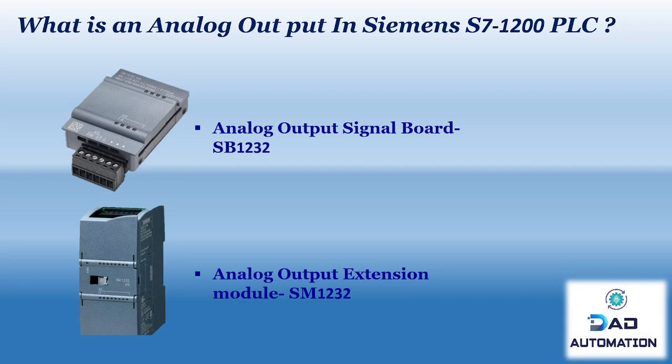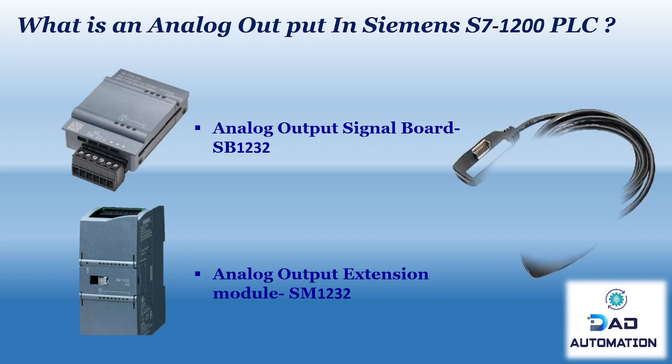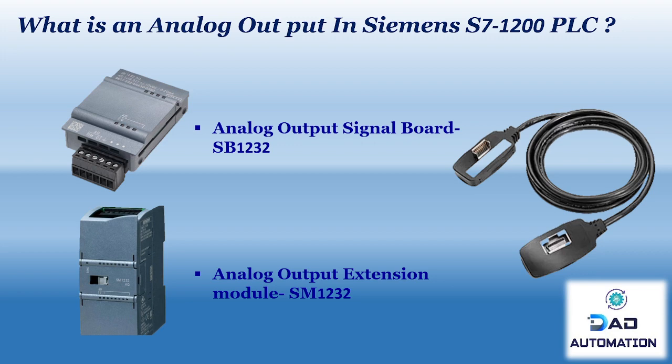What is an analog output in Siemens S7-1200 PLC? Mainly there are two types of analog output modules in the Siemens S7-1200 PLC. The first is the analog output signal board SB1232, which sits on top of the PLC, so no additional space is required due to its compact design. The second type is the analog output extension module SM1232, used when more analog outputs are needed in complex applications. An additional space in the control cabinet is required to install these modules. These modules can directly connect into the PLC by attaching the connecting port, and an expansion cable can also be used to connect them.